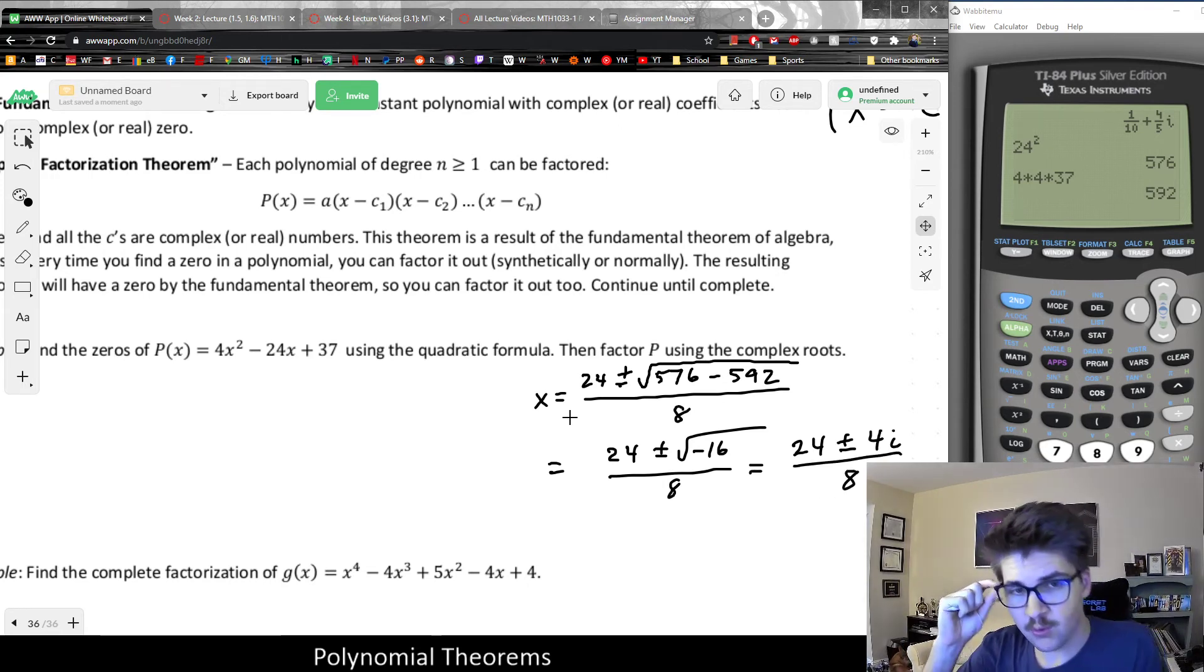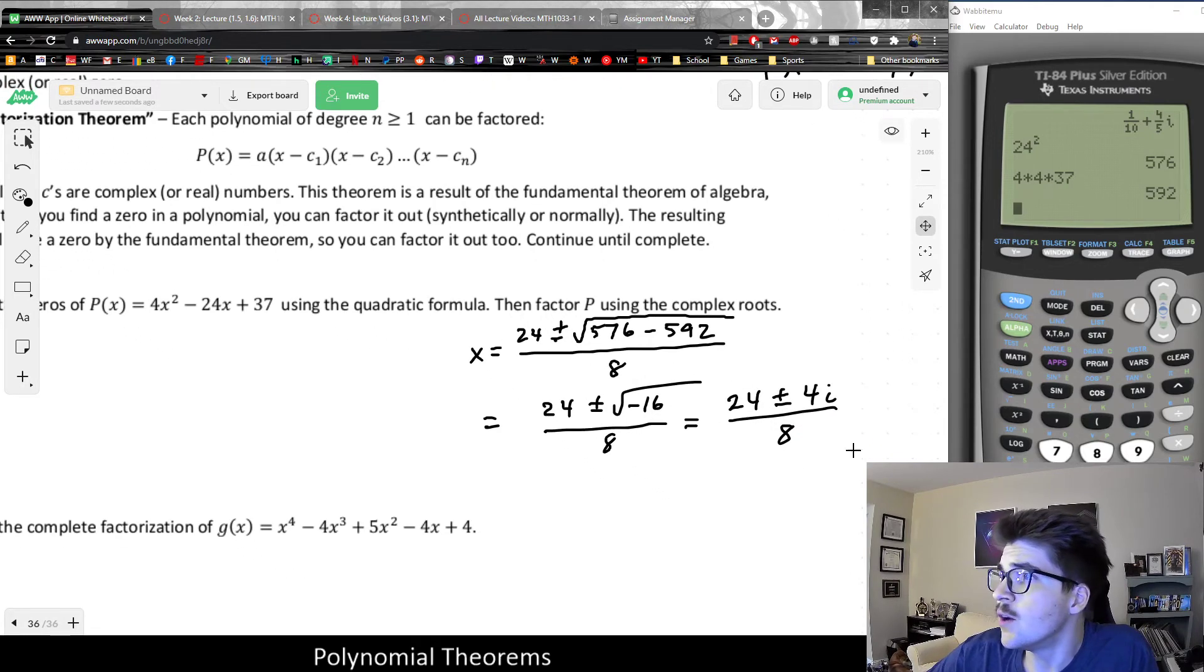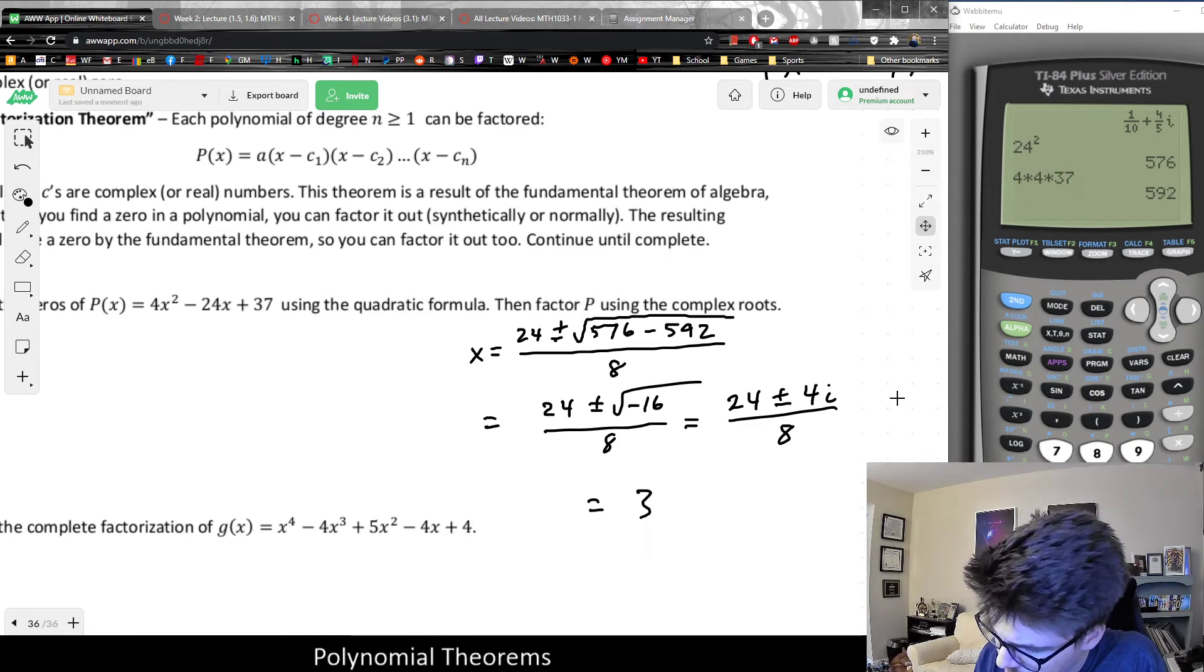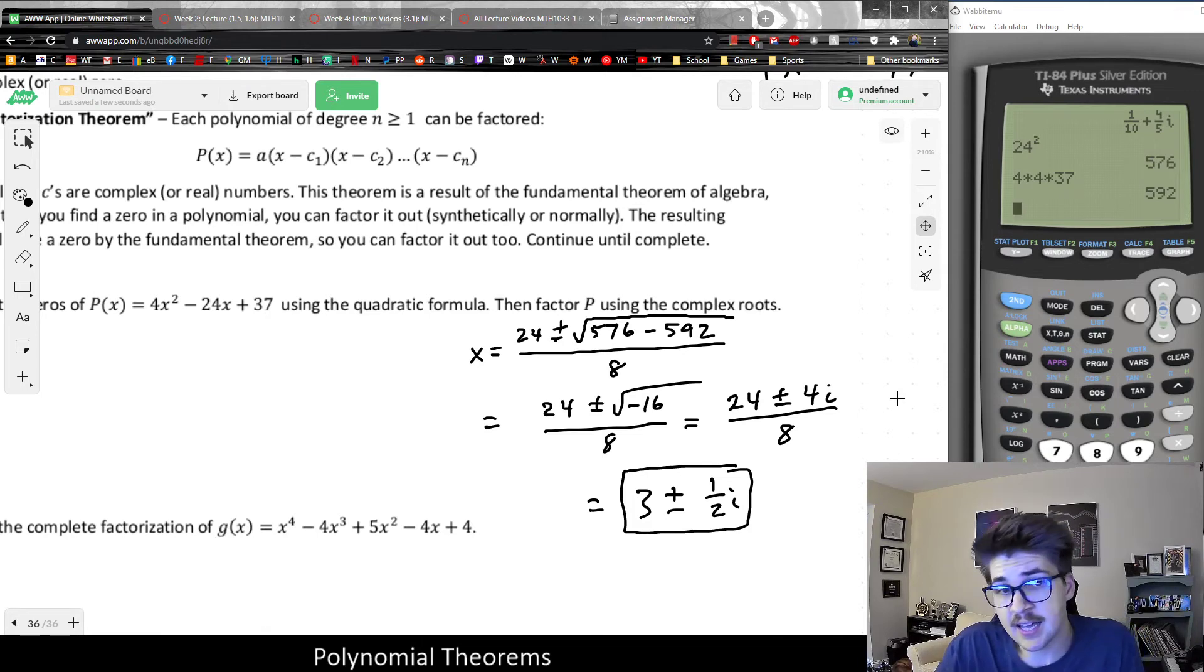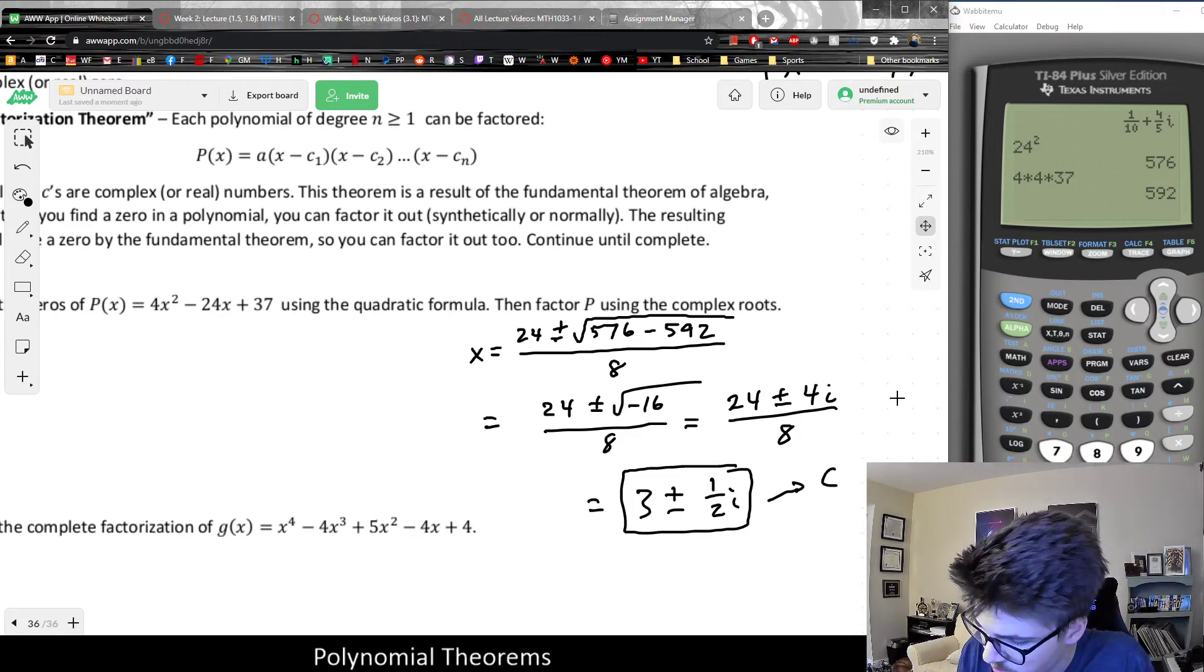Now that we have talked way too much about complex numbers, let's see how we simplify this. So this would give me 24 plus or minus the square root of, well, 596 minus 592. That should be negative 16. The square root of negative 16, since it's negative, that would be imaginary. And 16 would give me 4. So I would have 24 plus or minus 4i. And then we could, of course, simplify this by division. So 24 divided by 8 is 3. And 4i over 8 is 1 half i.